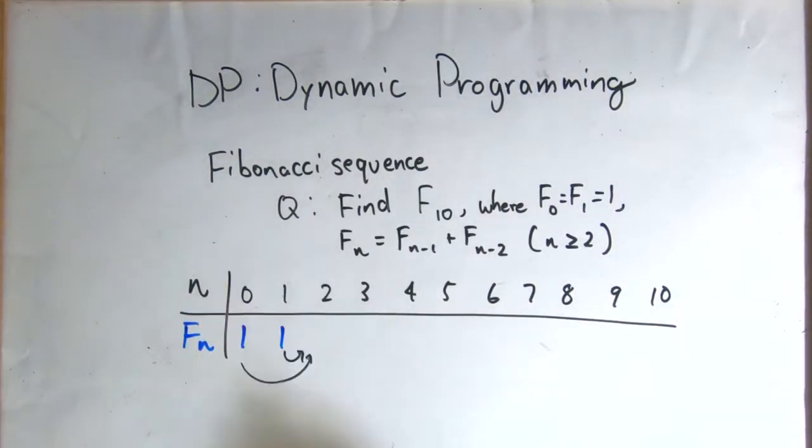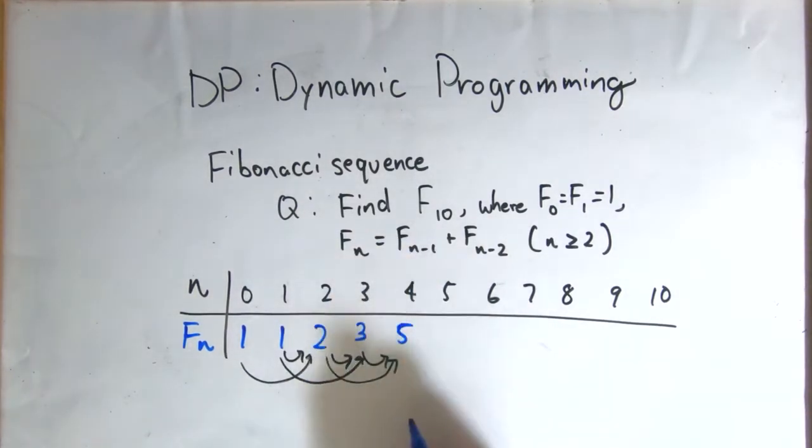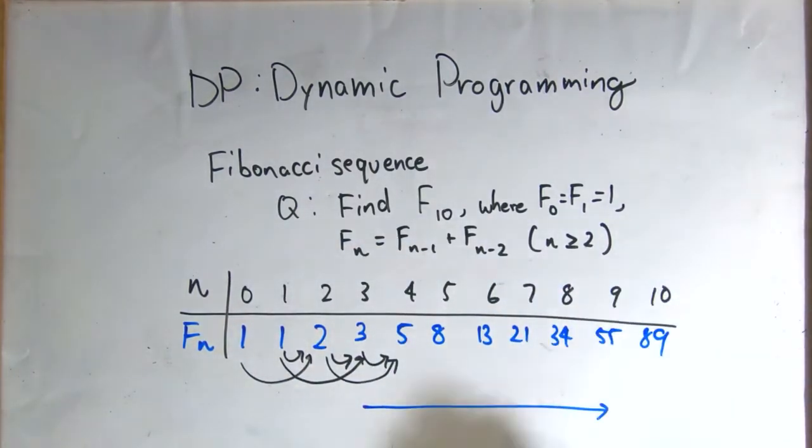So, starting with F0 equals F1 equals 1, we have F2 equals 2, F3 equals 3, F4 equals 5, and so on. We just need to add the previous two terms and bring it to the nth, just like in the definition.